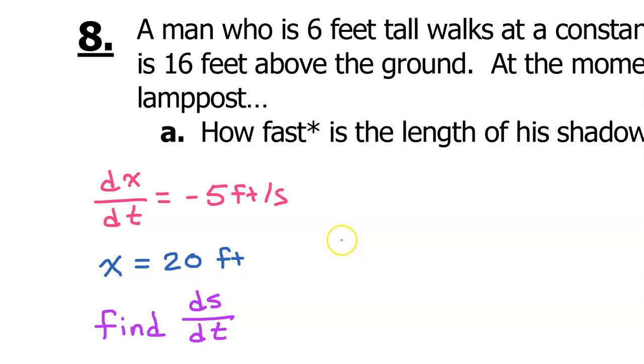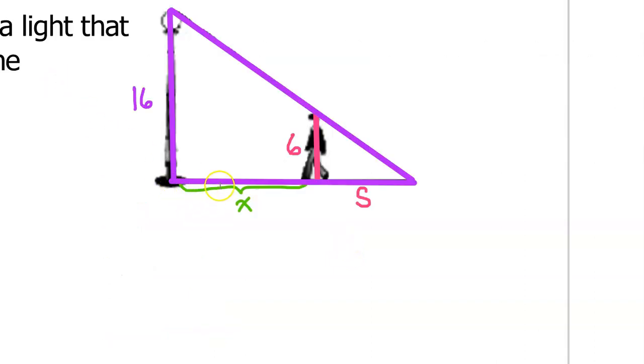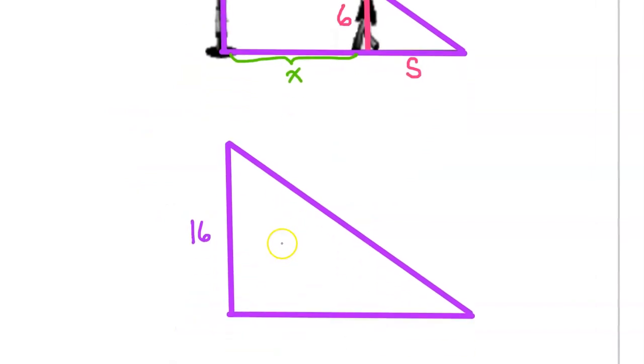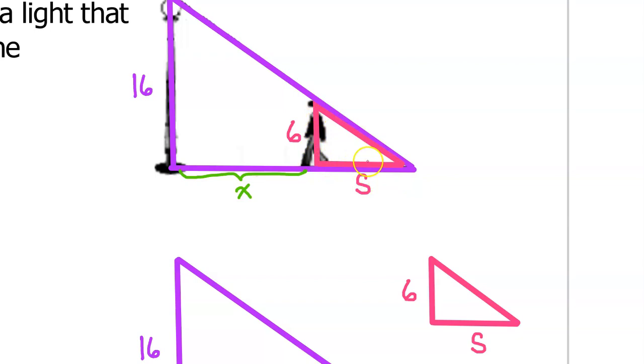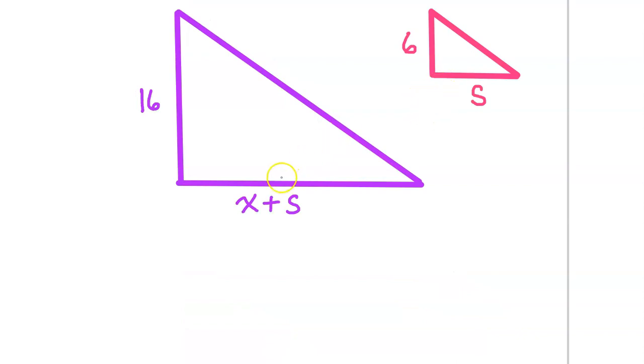The next step is to find a relationship between x and S. I bet we can use similar triangles. This problem involves two triangles. We have this large outer triangle shown now in purple. We can draw it separately like this. But we need to label this bottom side as x plus S because it represents the total of the distance between the man and the light post and the length of the shadow. And then we've got the small inner triangle shown here in red that can be drawn separately like this. Similar triangles will help us write an equation because we can set up a proportion in the form small over big is equal to small over big.